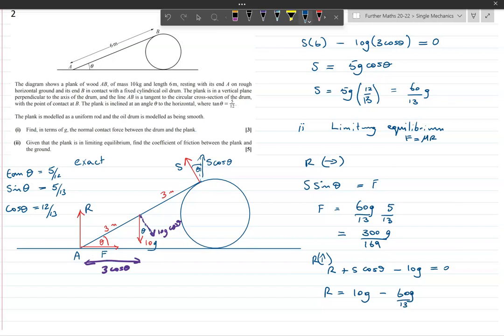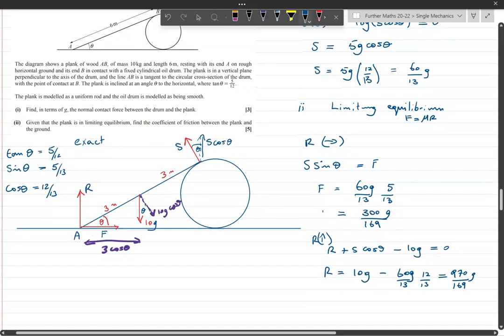So we have R equals 10g minus S cos theta. Now S is 60g over 13, and cos theta as we've already seen is equal to 12 over 13. And that all comes to, when we do all that, 60 times 12 is 720, so 1690 minus 720 over 169, so that comes to 970g over 169.